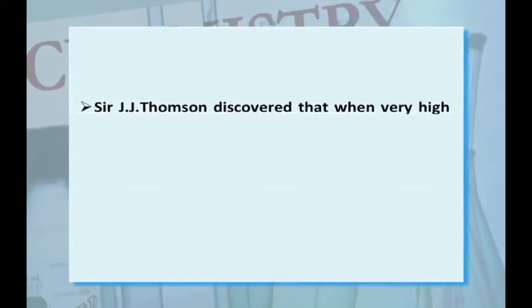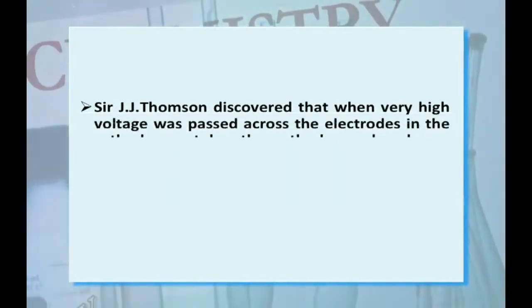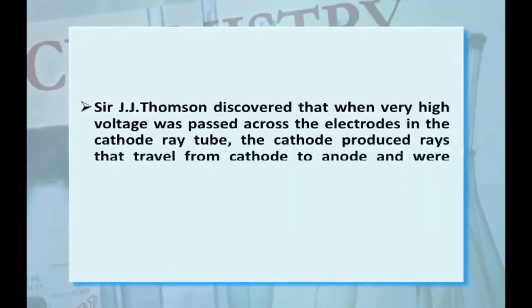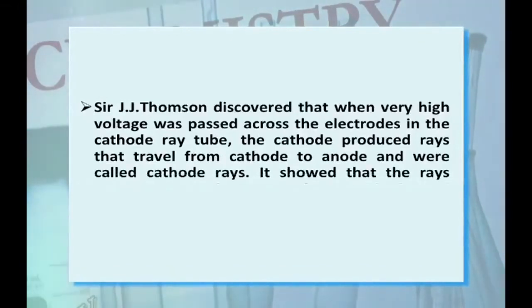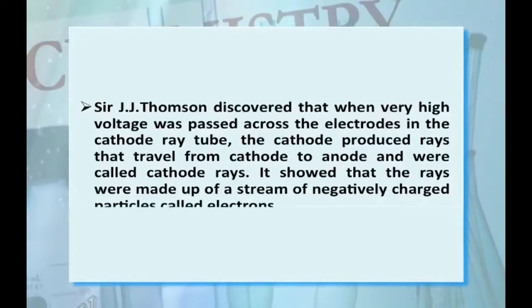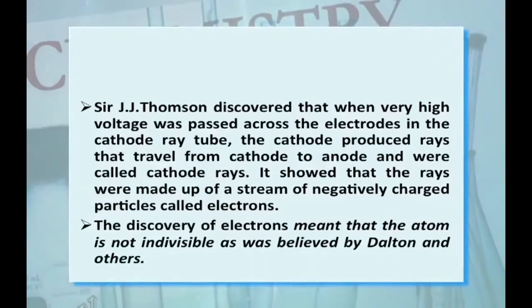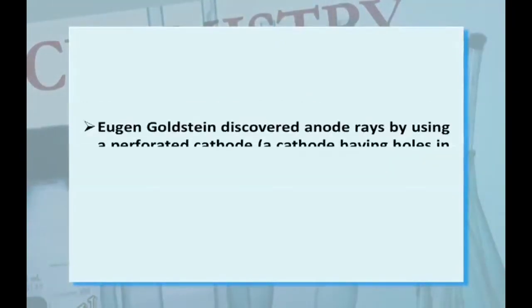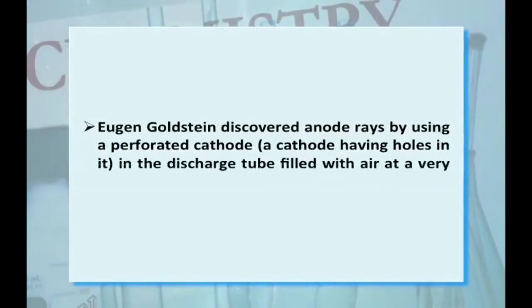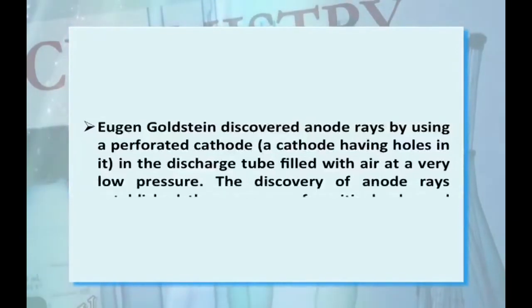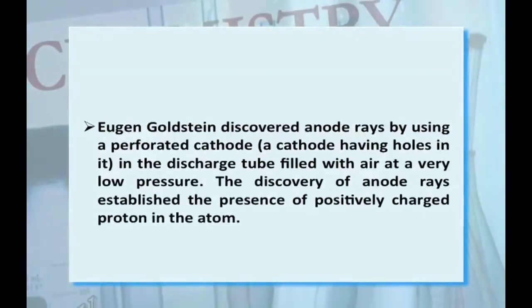J.J. Thomson discovered that when very high voltage was passed across electrodes in a cathode ray tube, the cathode produced rays that travel from cathode to anode, called cathode rays. These rays were made up of a stream of negatively charged particles called electrons. The discovery of electrons meant that the atom is not indivisible as believed by Dalton. Eugen Goldstein discovered anode rays using a perforated cathode in a discharge tube, establishing the presence of positively charged particles — protons — in the atom.